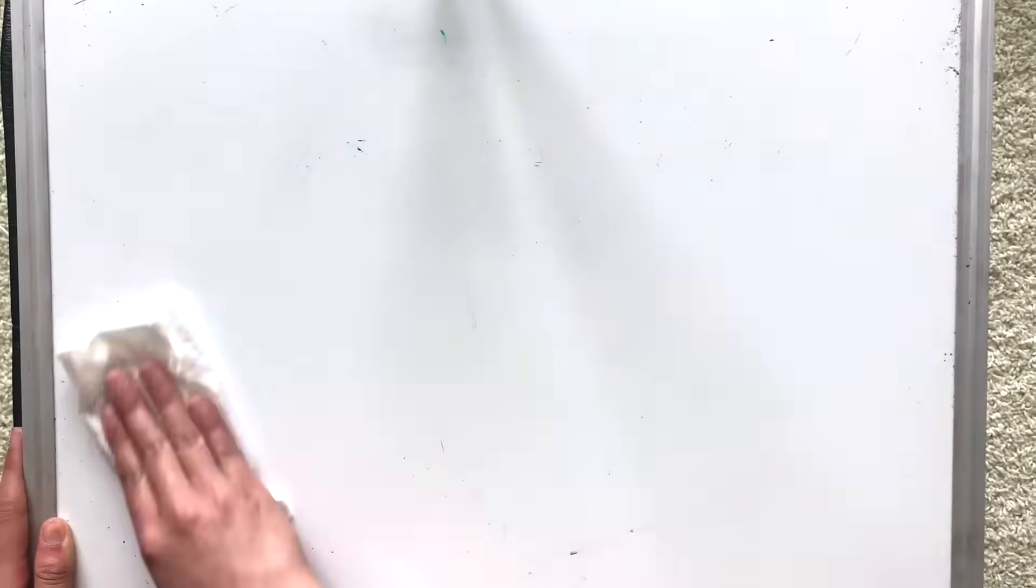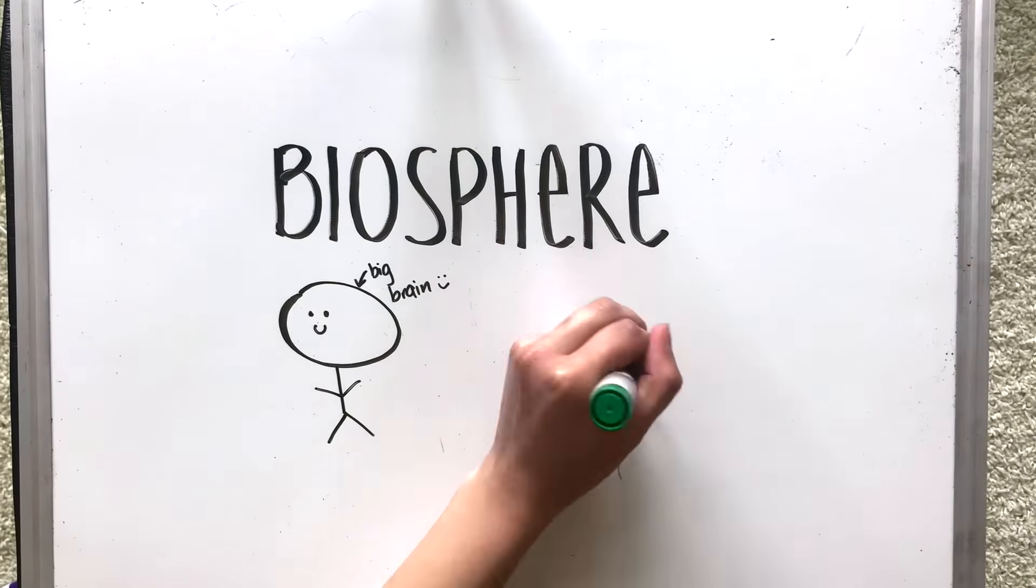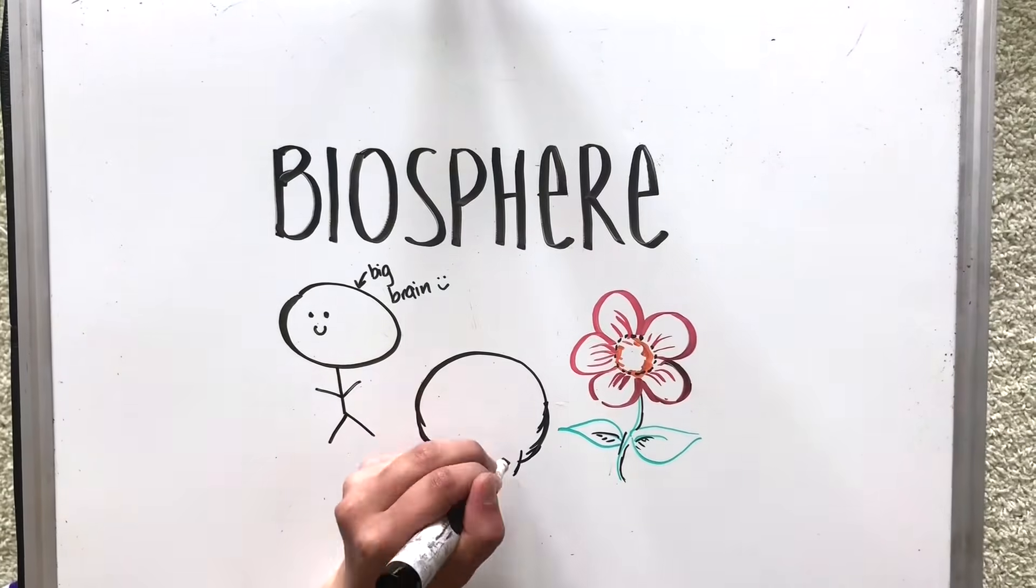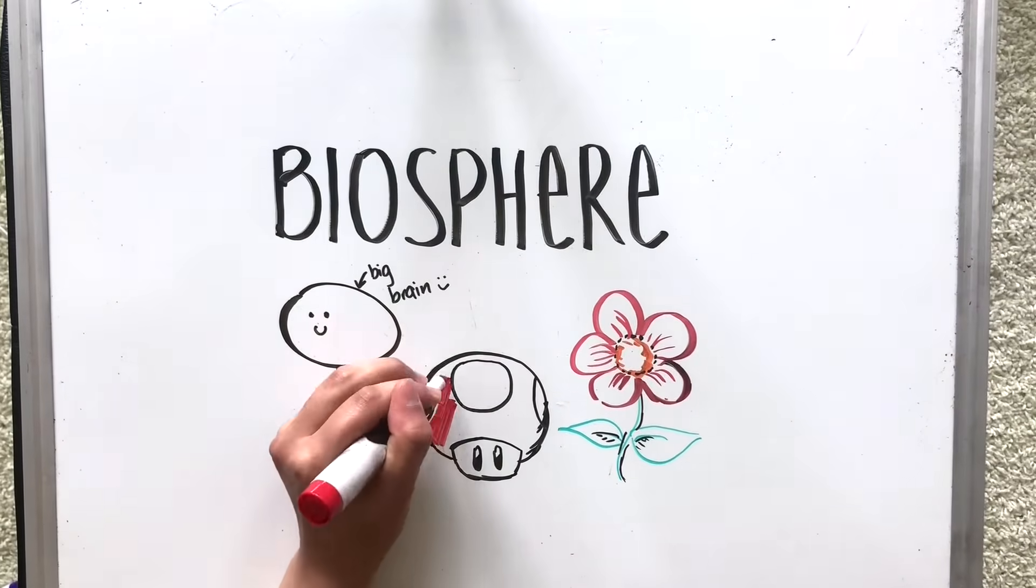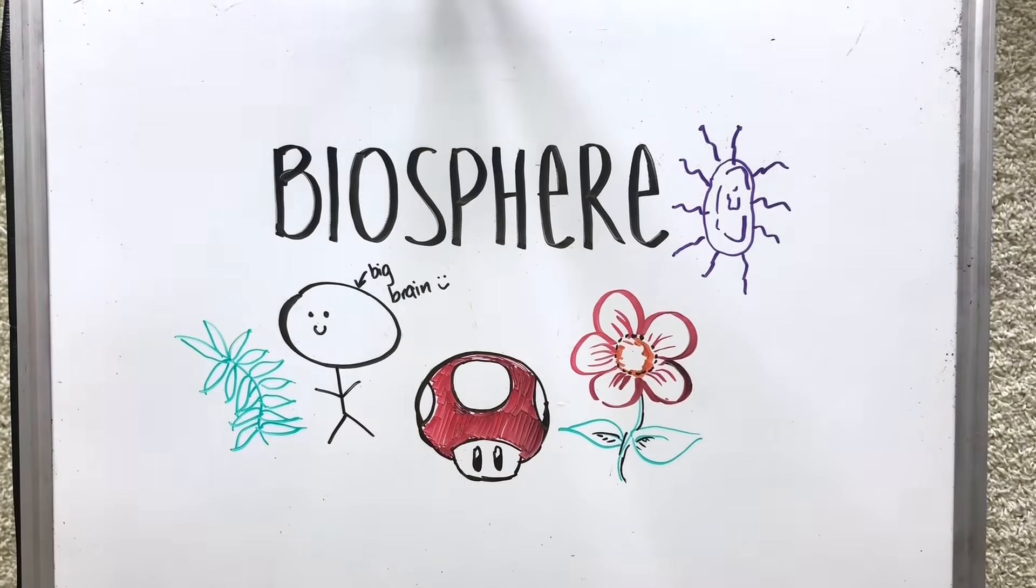Our third main system is our biosphere, which contains all living things on our planet Earth. From me and you, it also includes all the plants, animals, bacteria, fungi, basically all the life forms on Earth.